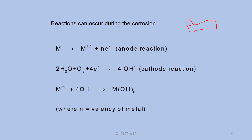On a metal surface, one part acts as anode (A) and another as cathode (C). At the anodic area: M → Mⁿ⁺ + ne⁻. These n electrons are transferred to the cathodic area. At the cathodic area, H₂O₂ gains electrons and forms OH⁻. The Mⁿ⁺ and OH⁻ ions combine through the conducting medium and form M(OH)ₙ. This is the electrochemical theory of corrosion.